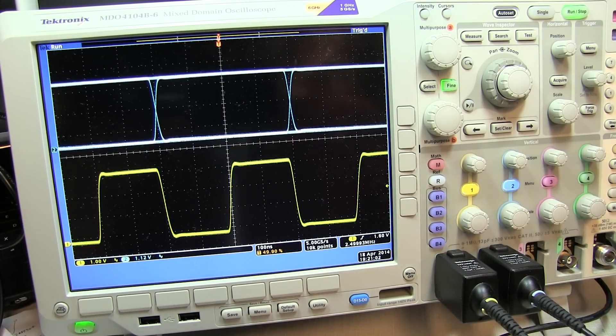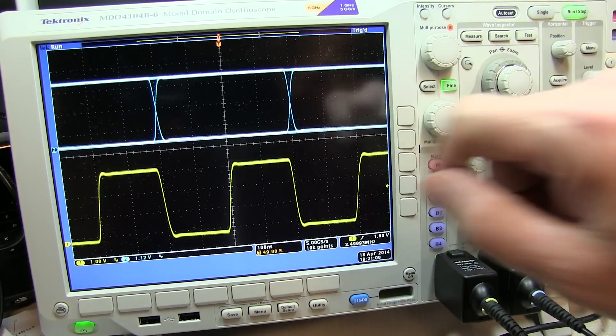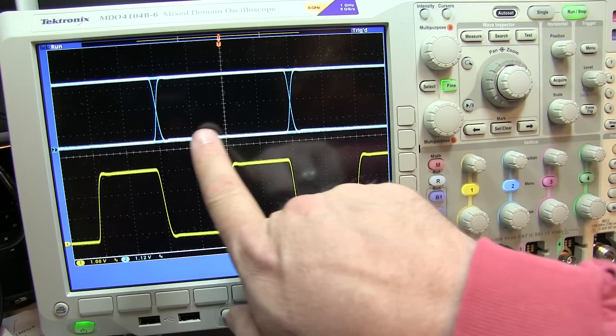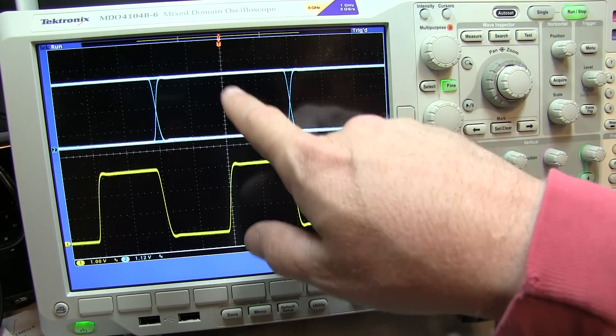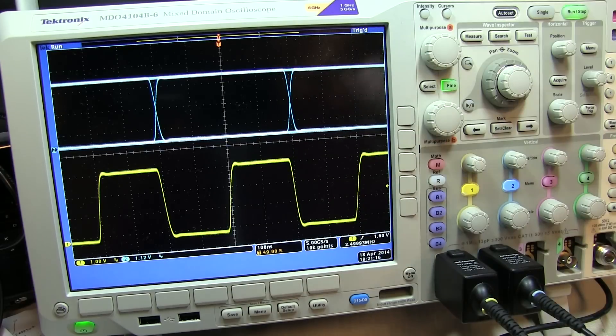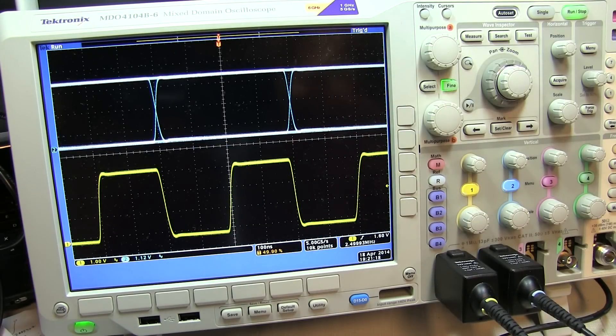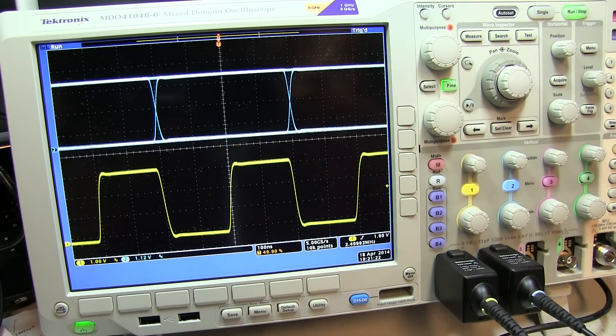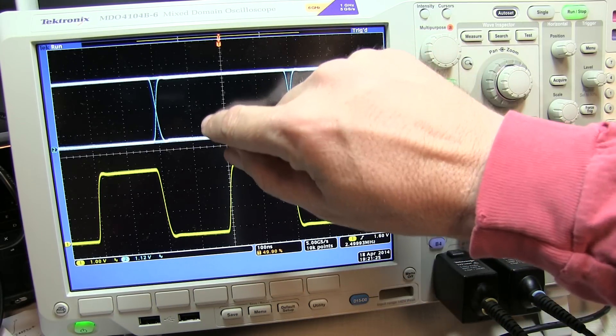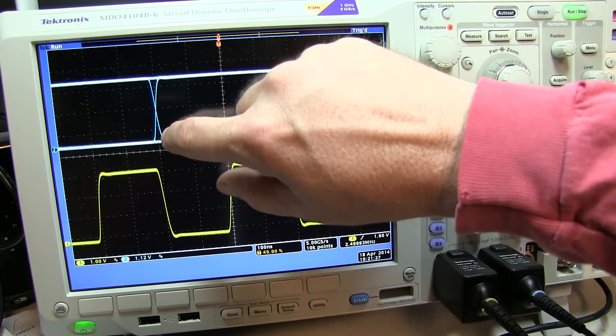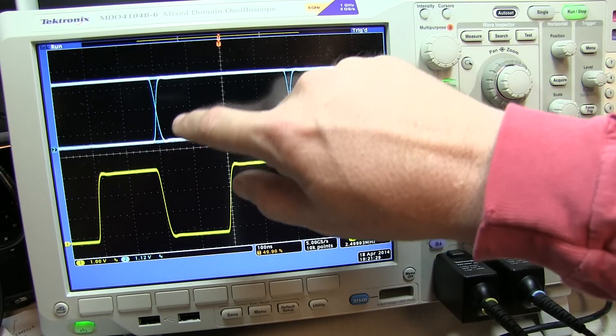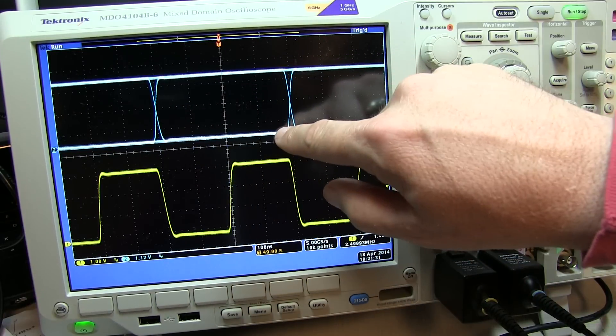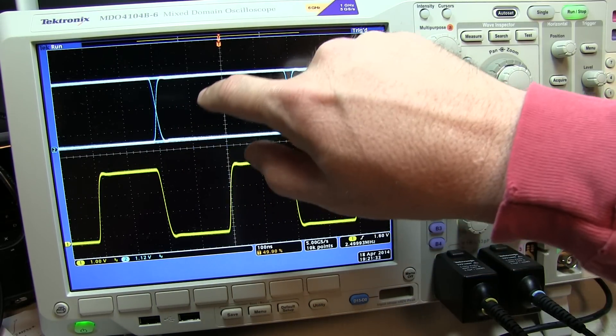Oftentimes, for things like hard disk drives and CD players and things like that, the data is such that the rising and falling edges are pretty slow. And you get a lot of what's called inter-symbol interference, where you don't really have a rising or falling edge that finishes before the next bit time comes along. But the encoding that's used can extract all of that out.